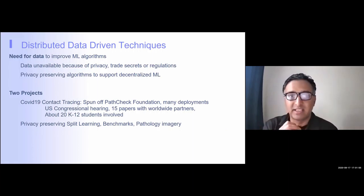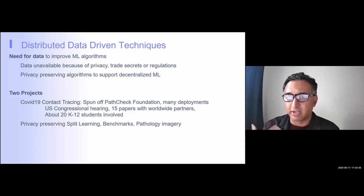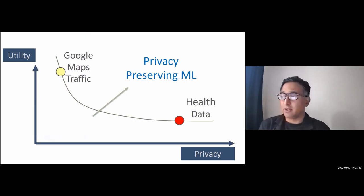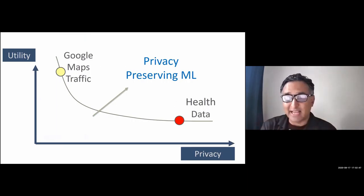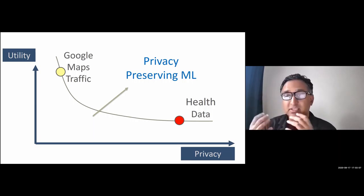The main story here is that anytime you have distributed data needed for machine learning, that data is unavailable because of privacy, trade secrets, or regulation. What we can do is use privacy-preserving algorithms to support decentralized machine learning. On one hand, for Google Maps, we willingly give away our location. For health data, we don't — it stays in silos and we get very little utility.